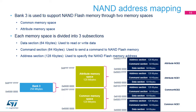Bank 3 is used to interface with the NAND Flash memory. It is divided into two memory spaces: common memory space and attribute memory space. Both spaces are similar. The common memory space is for all NAND Flash read and write accesses, except when writing the last address byte to the NAND Flash device, where the CPU must write to the attribute memory space.